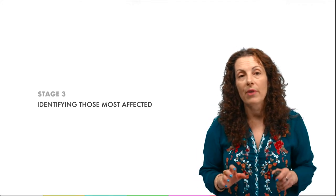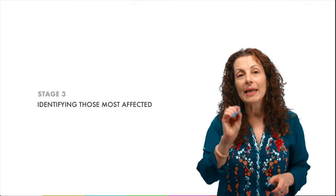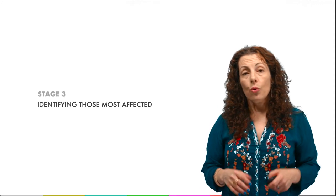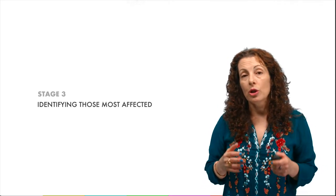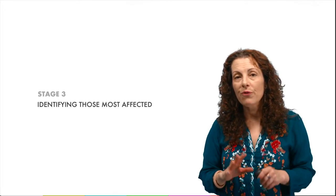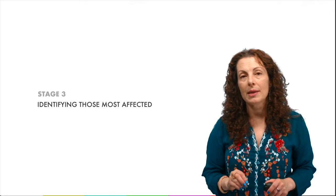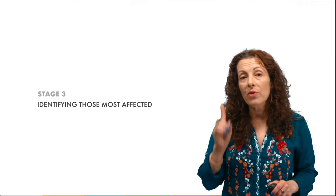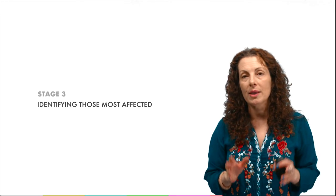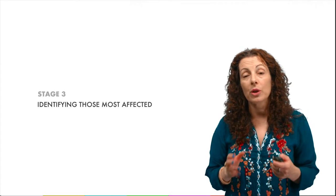Once we've identified our affected parties, we can use this information to test our problem definition by interviewing those people and inviting them to review our problem definition. Realistically, we all know that we often have the solution in mind when developing a description of the problem. That's okay. It's fine to end up at the place we started. But going through the problem definition exercises helps us ensure that our solution, as we've envisaged it, is indeed a response to a problem as real people actually experience it. It also helps us ensure that a potential solution is something we can actually bring to fruition.